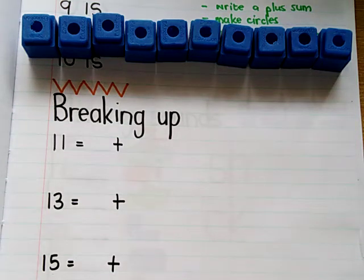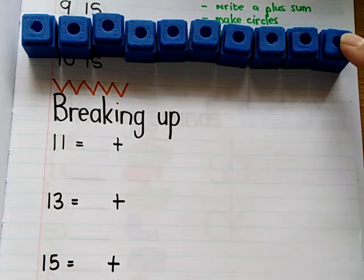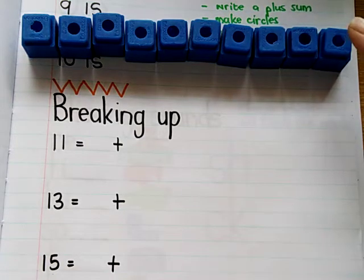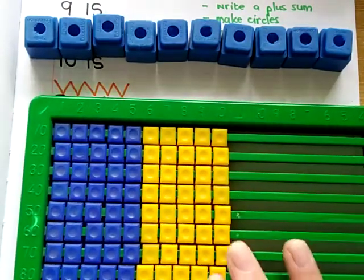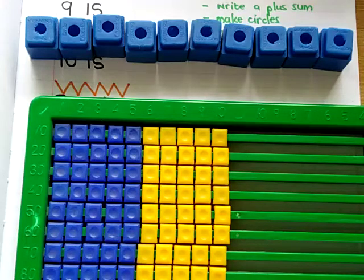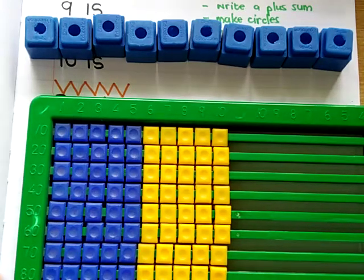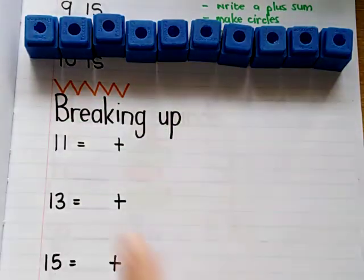We're going to practice breaking up numbers again. The main thing is that we need some counters. Now I've got blocks, but you can use anything: bread tags, pasta, anything you like. You can also use a counting frame. The other name for this is an abacus, so whatever you've got, it doesn't matter.